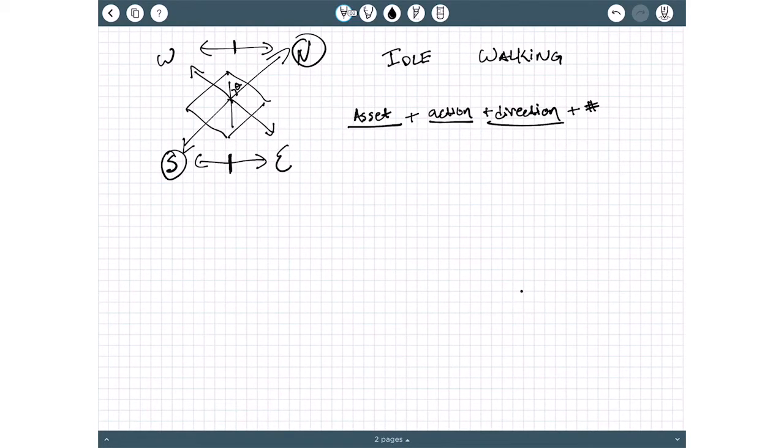So you end up getting some file name out of this that the game expects for each asset. For example, hero underscore walking underscore n for north underscore one would be the first frame for the hero walking in the north direction.